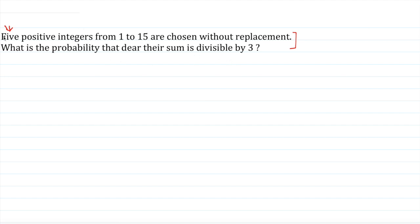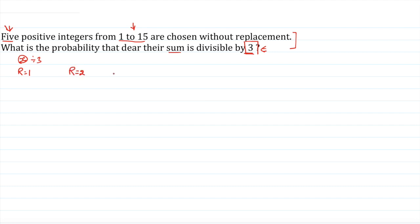We have to select five numbers out of the first 15 natural numbers such that the summation is divisible by 3. Since we are working on divisibility by 3, we need to divide these 15 numbers by the rule of 3. Any number x has 3 categories: when divided by 3, the remainder is 1; remainder is 2; or remainder is 0.